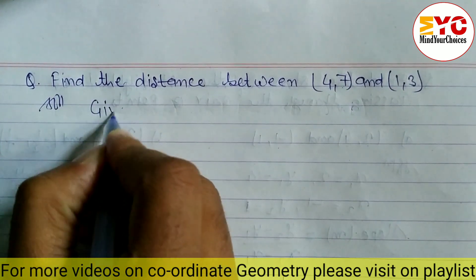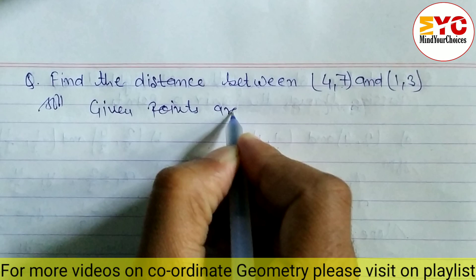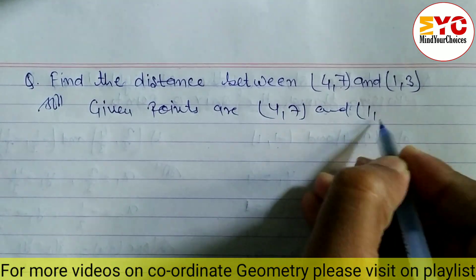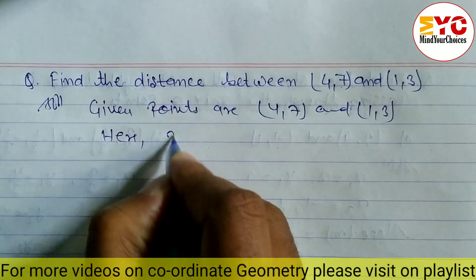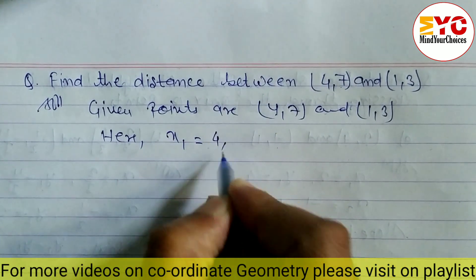Given points are (4,7) and (1,3). What is the value of x1 and y1? The first element from the first point is x1, which is 4, and the second element of the first point is y1, which is 7.